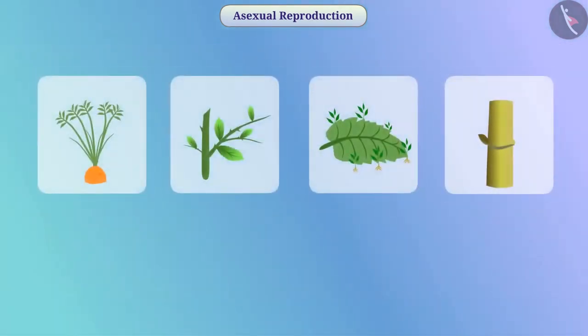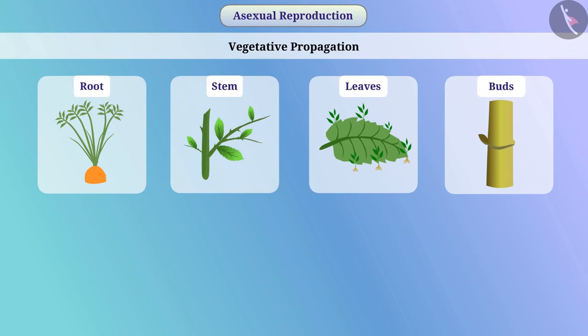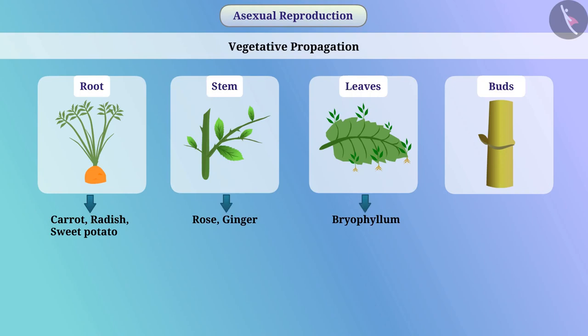Vegetative Propagation: In favourable circumstances, some plants can be grown from their parts, like root, stem, leaves, or buds. This is called vegetative propagation. For example, carrot, radish, and sweet potato can be grown from the root of the plant. Rose and ginger can be grown from the stem. Bryophyllum can be produced from the leaves of the plant.